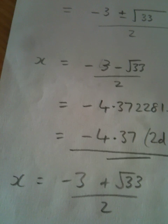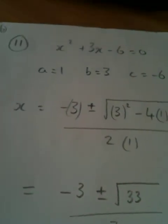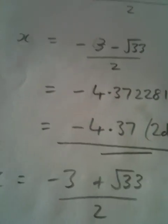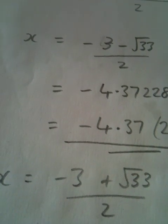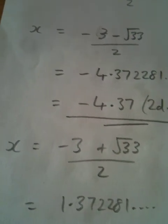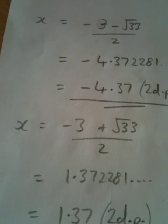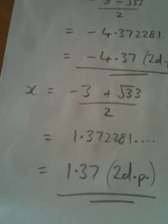The second solution. Instead of going for the negative, I'm going for the plus. So negative 3 plus root 33 over 2. 1.372281, etc. 1.37 to two decimal places.